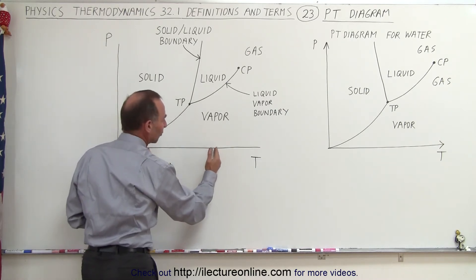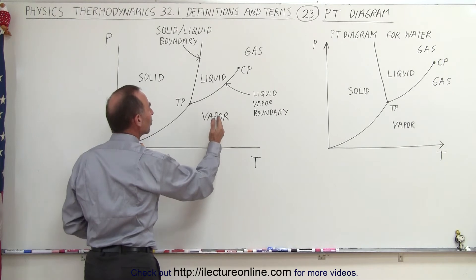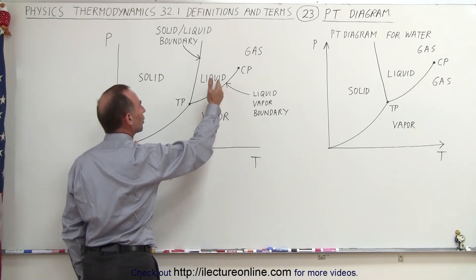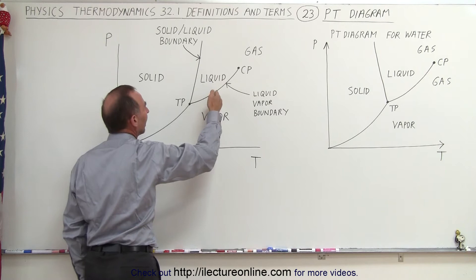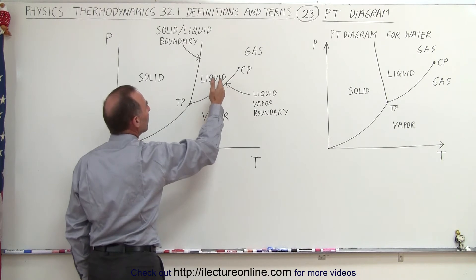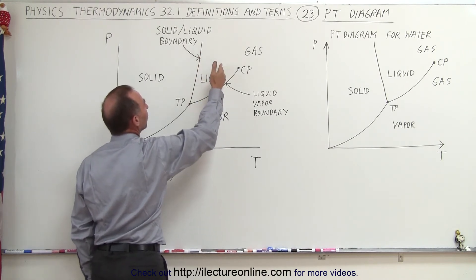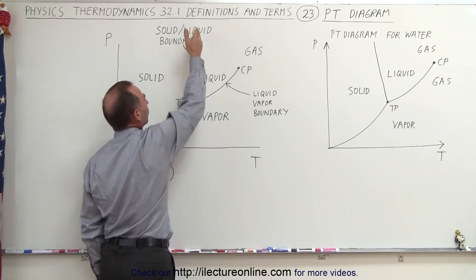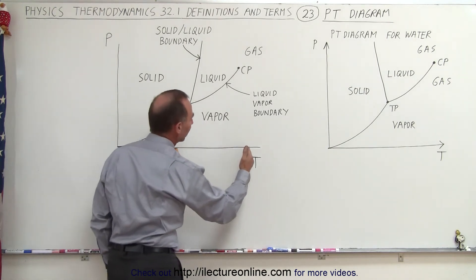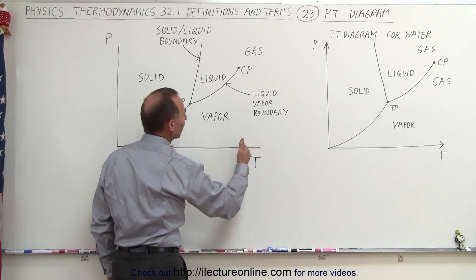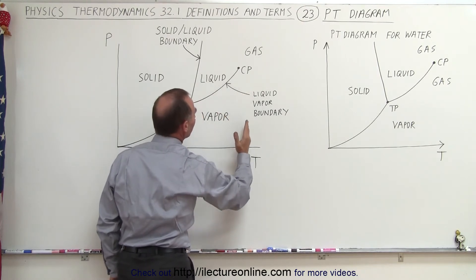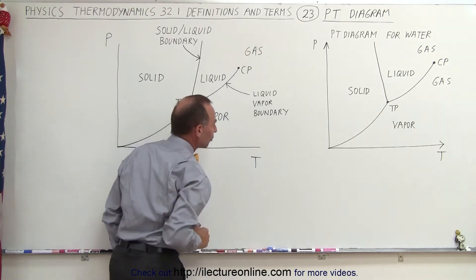As we go further to the right and the temperature continues to increase, applying more and more pressure will eventually turn the vapor into liquid again — along what we call the liquid-vapor boundary. It gets to the point that if the temperature is high enough, no amount of pressure will turn it into a solid. The liquid will simply turn into a gas, and you'll need tremendous pressures before the gas turns into a solid. To the right of the critical point temperature, everything will be a gas because the temperature is simply too high.